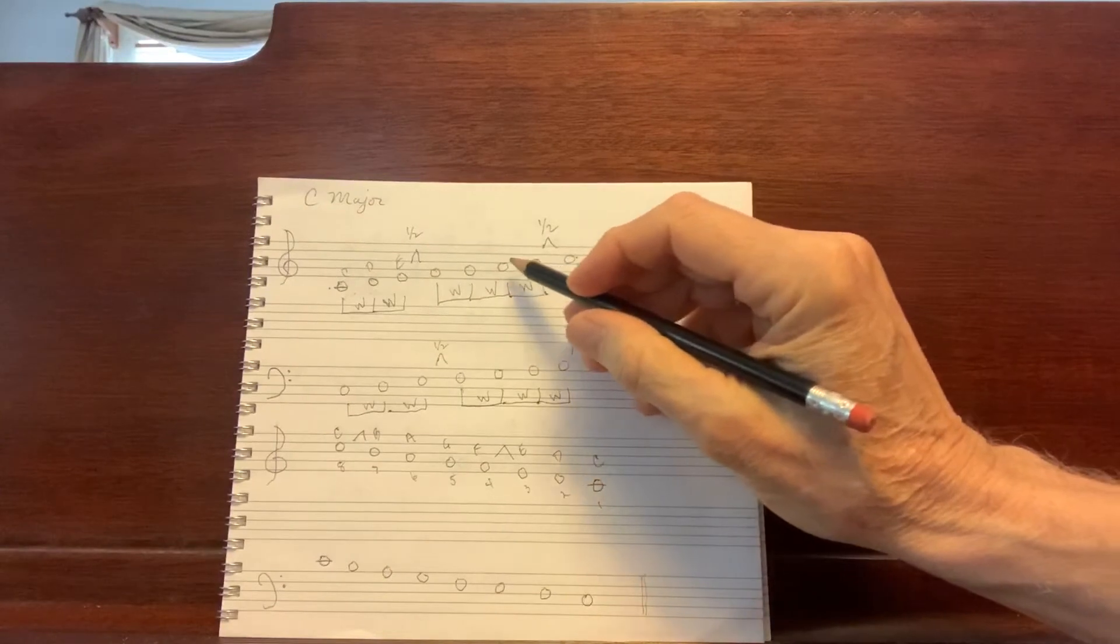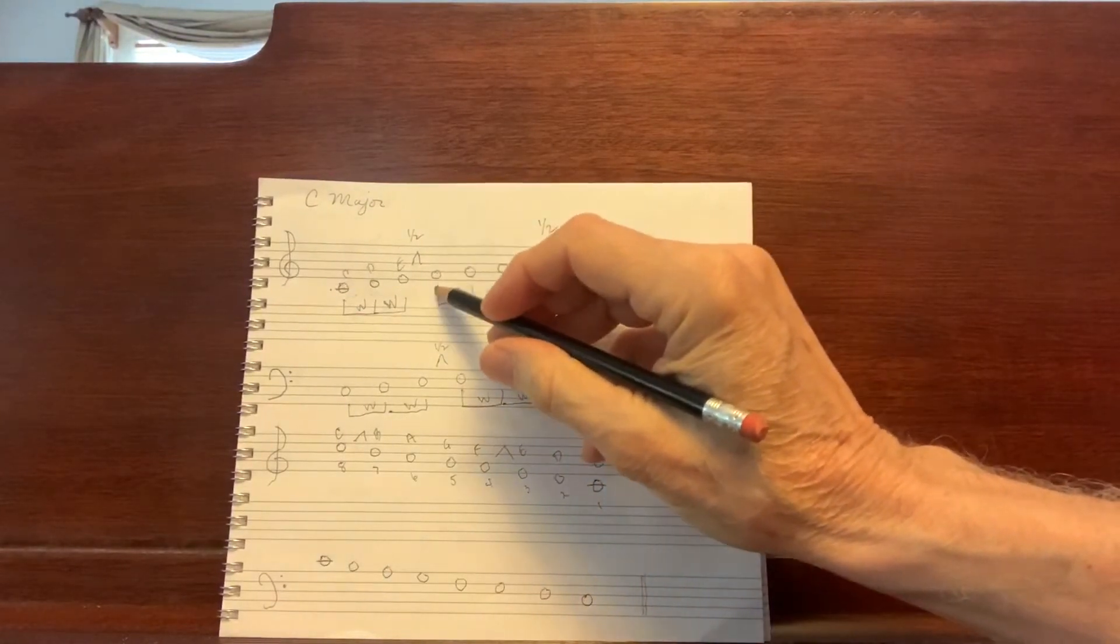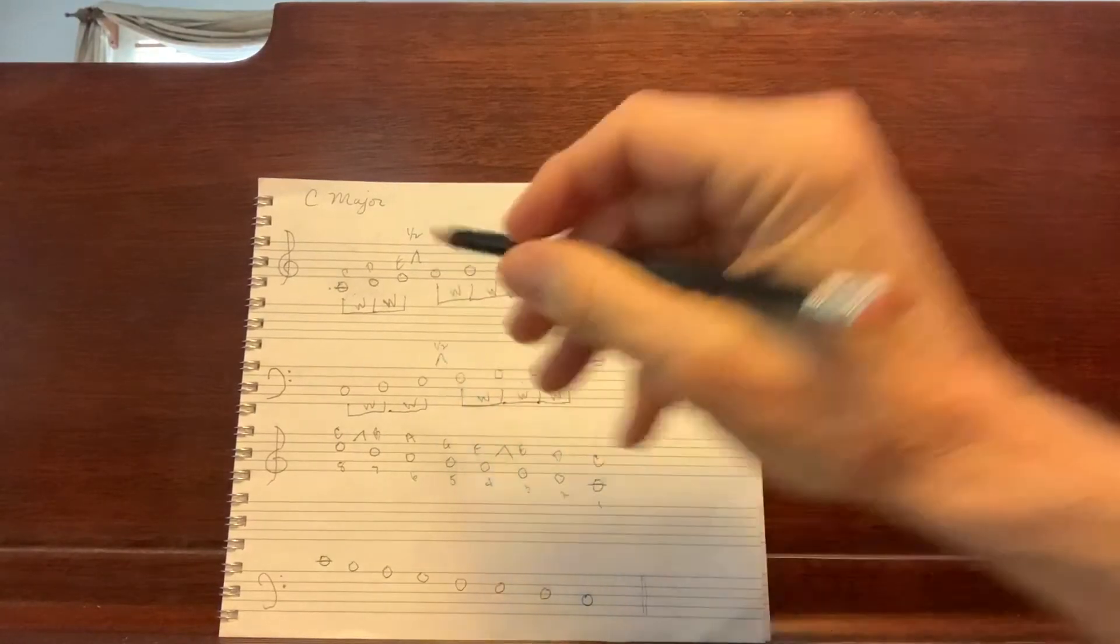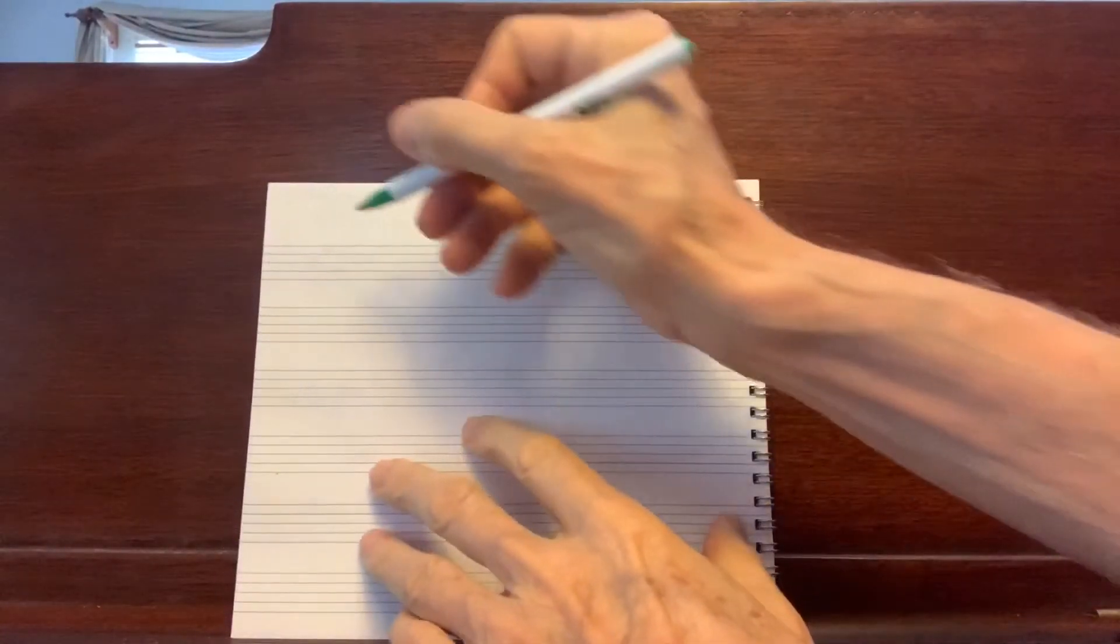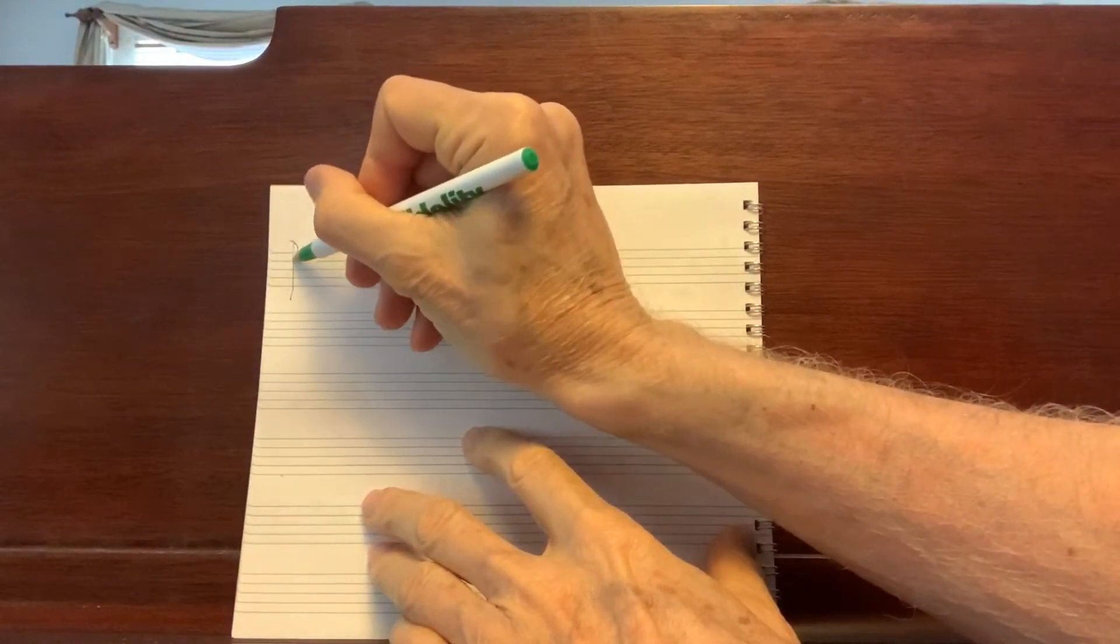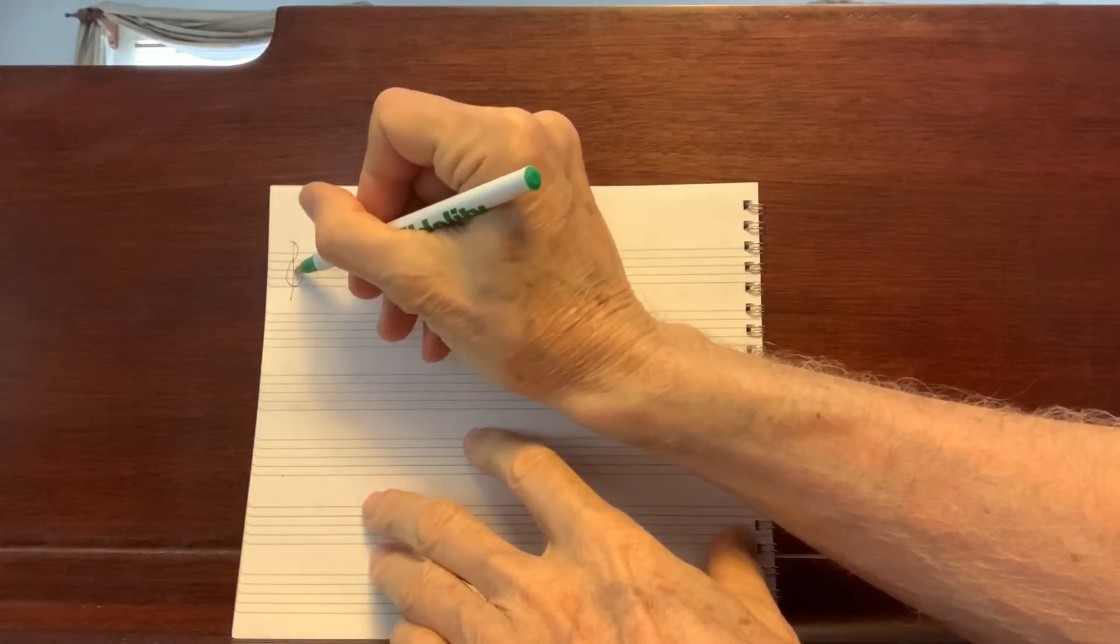So C, B, A, G, F. That's 5 down and F will be our next scale.